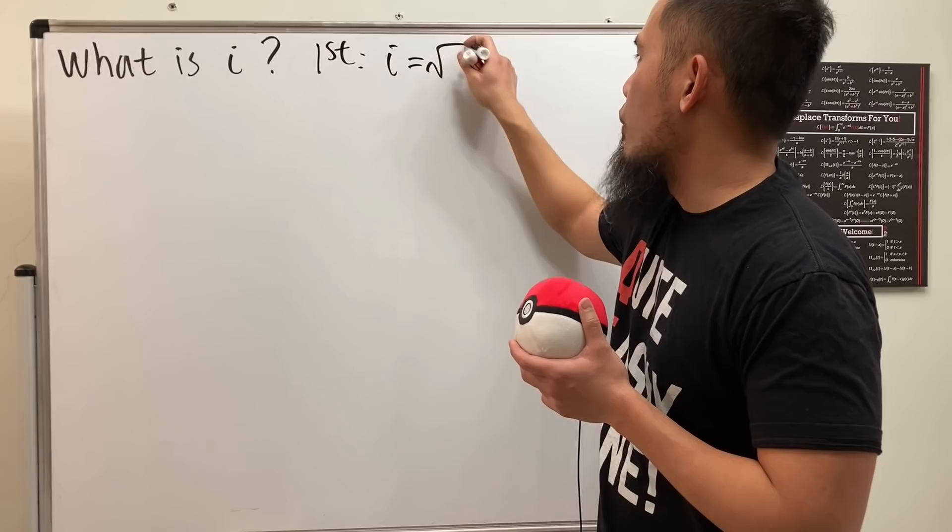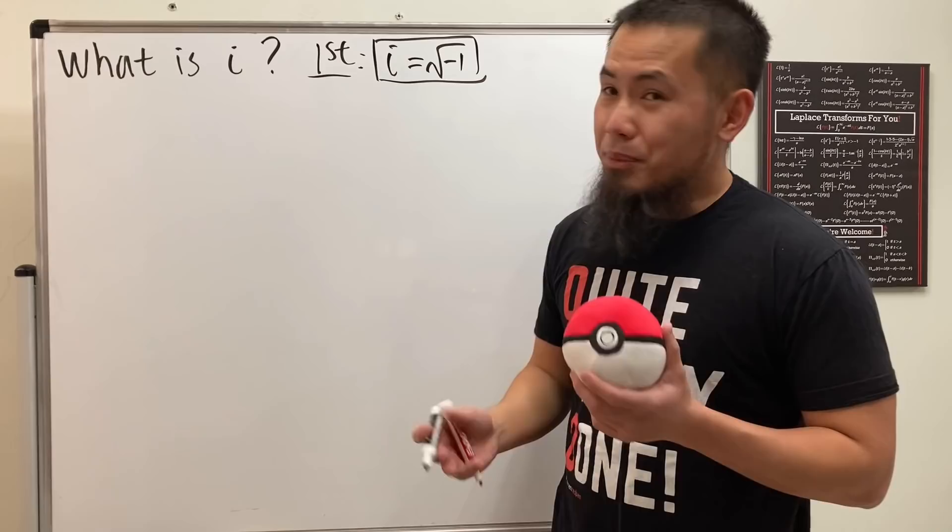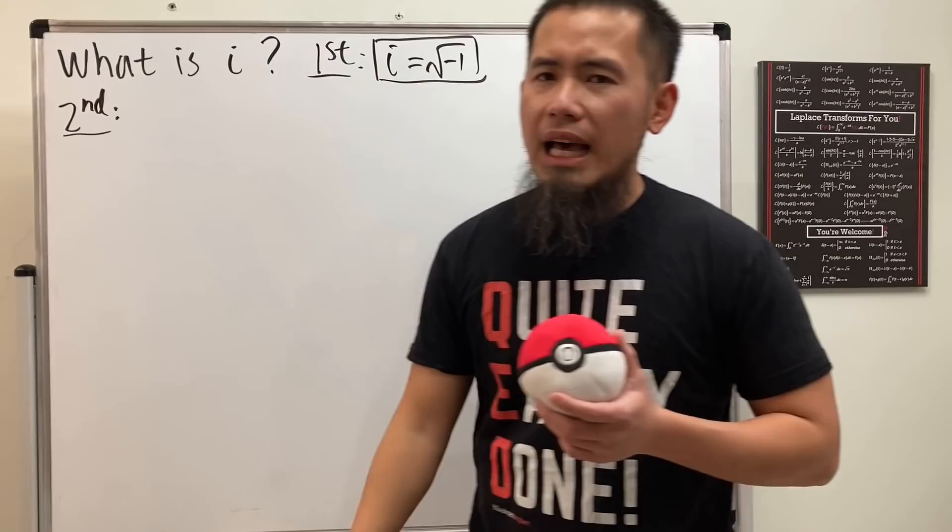Of course, we can just give the regular answer first, which is just saying that i is equal to square root of negative 1. Well, done deal. But no, I'm not going to stop right here because otherwise this would just be a 10-second video. So I'm going to give you guys two more answers. So have a look right here.